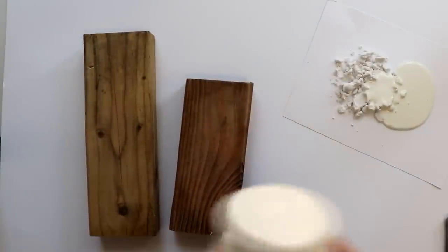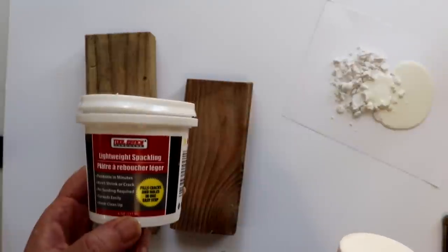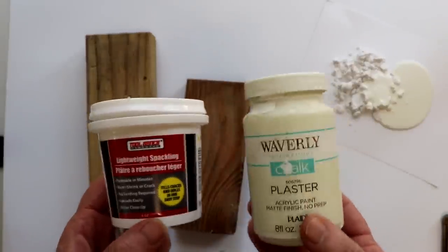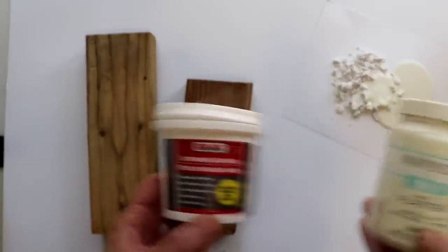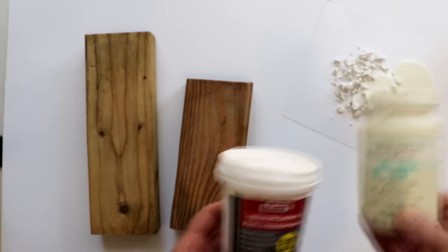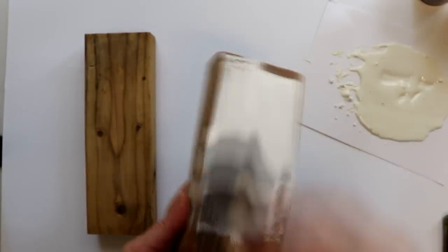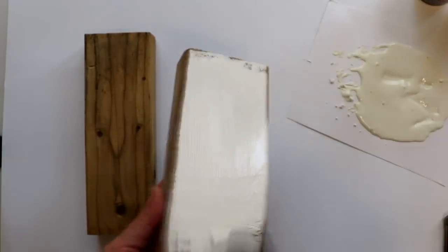To get more of a stone look, I'll use my favorite spackle paint, which is a one-to-one mix of spackle and chalk paint. I really like the Dollar Tree brand and I'm going to mix it with some Waverly chalk paint in the color plaster. Next, I'll give the wood pieces two coats each with the paint.